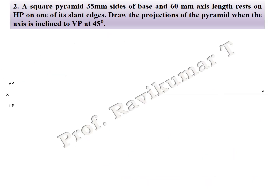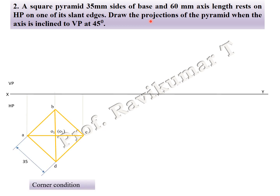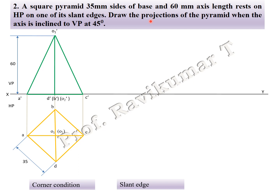Next we go to the next problem. It is the same problem, but the word 'appears' is not there in the problem — same slant edge but no 'appears' word. Slant edge means corner position. First and second position are similar to the previous problem. Corner condition, naming. Draw projection line upward, take height as 60 — this completes the first position. The second position: which is the slant edge — C to O is the slant edge. Place it on XY line.